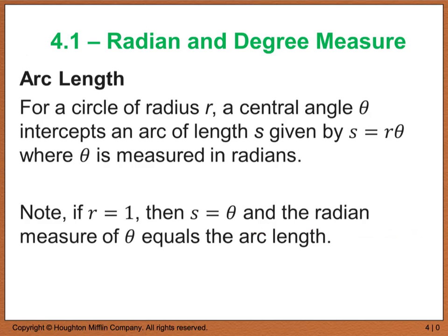For a circle of radius r, we have a central angle theta that intercepts an arc of length s, and it's given to us by s equals r theta, where theta is measured in radians. This formula was rearranged because before, we were given that theta was equal to s, or the arc length, divided by the radius. This is what the definition of a radian measure was.